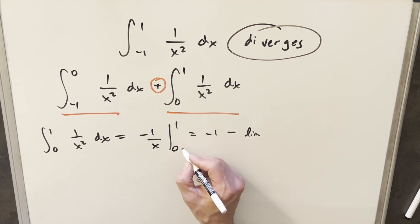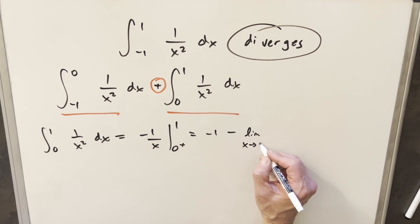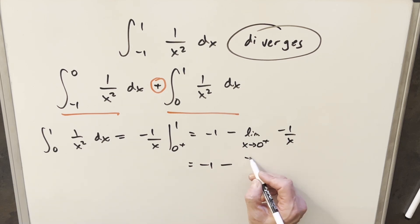And then again, we're going to have this limit. But this time, we're evaluating this at 0 plus. So we're looking at the limit from the right side of 0, minus 1 over x. This is going to be minus 1 minus. Then evaluating this limit, it's going to be like minus 1 over 0 plus.